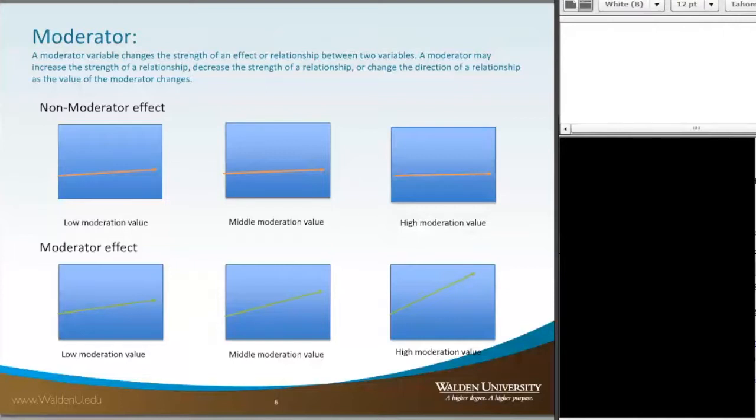When the moderator is actually effective, we see that at the low value we've got a slope, at the middle value the slope actually increases, and then it changes again at the high value. So that's what we would call the moderator effect, whereas the one above is a non-moderator effect.